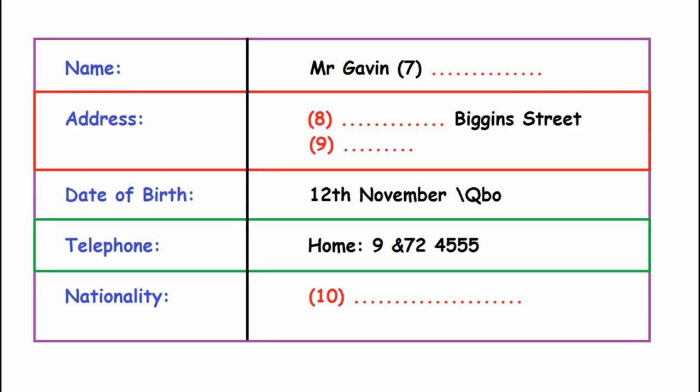Now listen carefully and answer questions 7 to 10. Can I arrange the policy over the phone? Sure, just let me get the details down. So, that's Mr. Gavin Murray, that's M-U-R-R-A-Y. And the address is? It's 16C Biggins Street, South Hills. That's right, it's two words, South Hills.